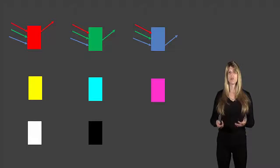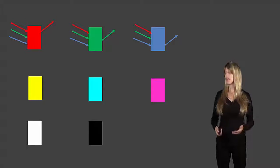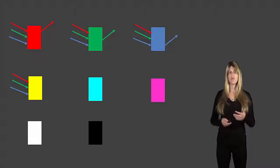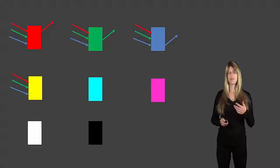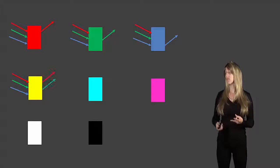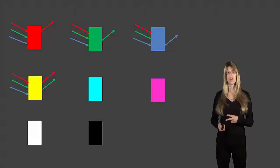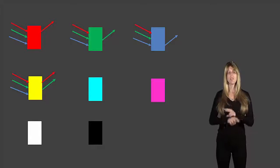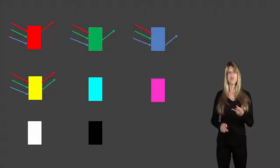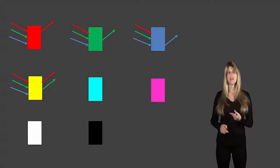Now let's look at what happens when we see secondary colors. If we have a yellow object, red, green, and blue light come in. In this case, two colors are reflected: red and green are reflected, and the blue is absorbed. From our Venn diagram, we know that red and green together make yellow — so that's why the object looks yellow.